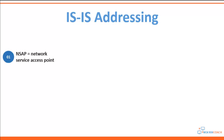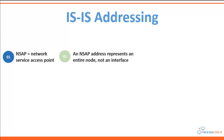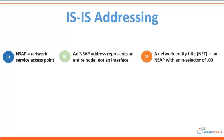The IS-IS addressing schema uses an address called a Network Service Access Point, or NSAP. Because IS-IS is built on the underlying CLNS platform, all routers need a CLNS address, which is an NSAP address. Unlike an IP address, an NSAP address represents an entire router, not just a particular interface. Within IP routing, a router identifies itself to other routers using a Network Entity Title, or NET address — which is simply an NSAP address with an nselector of 00. Routers use this NET address similarly to how OSPF uses a router ID, to identify themselves in IS-IS link state packets.